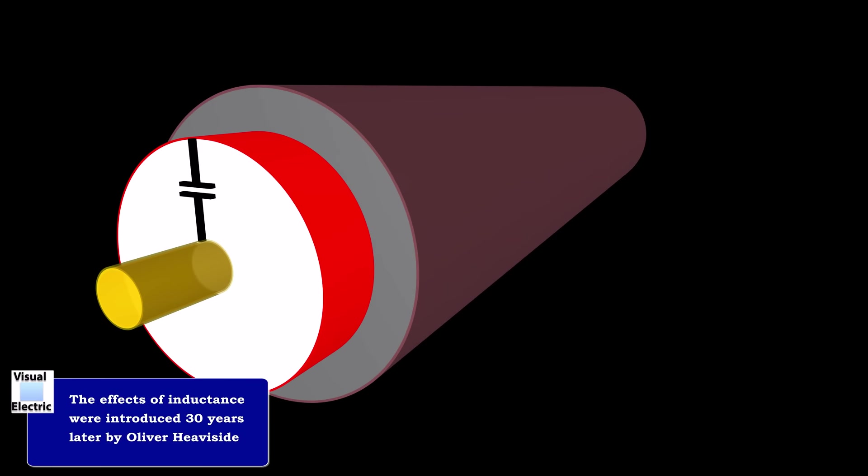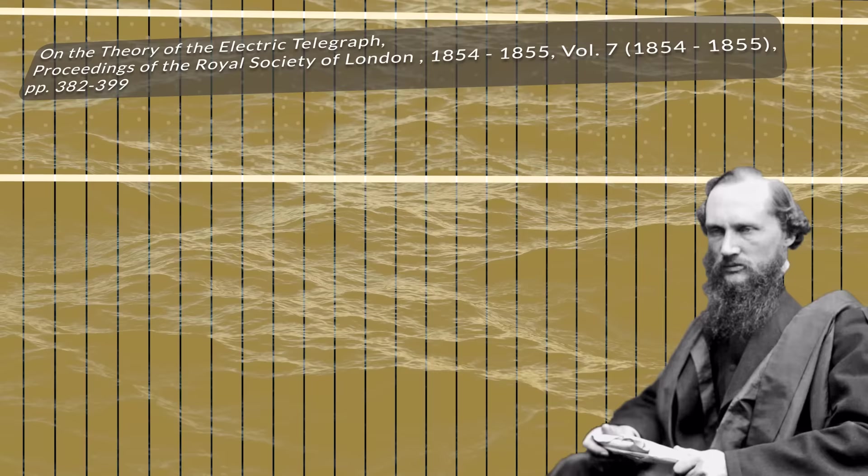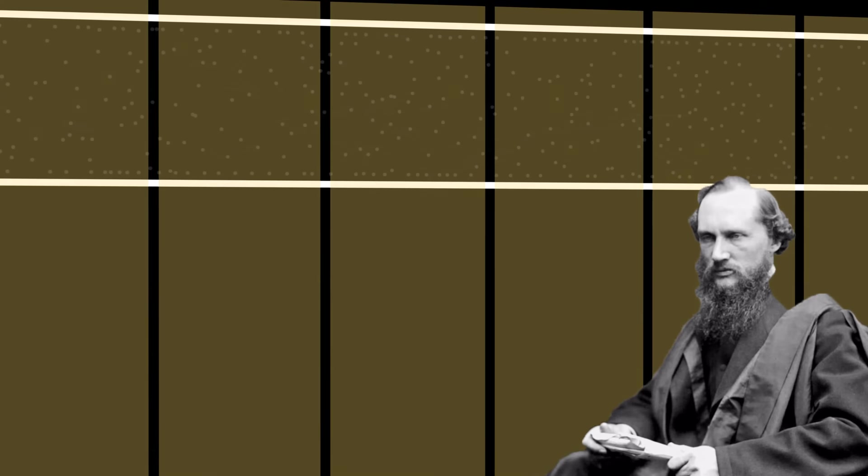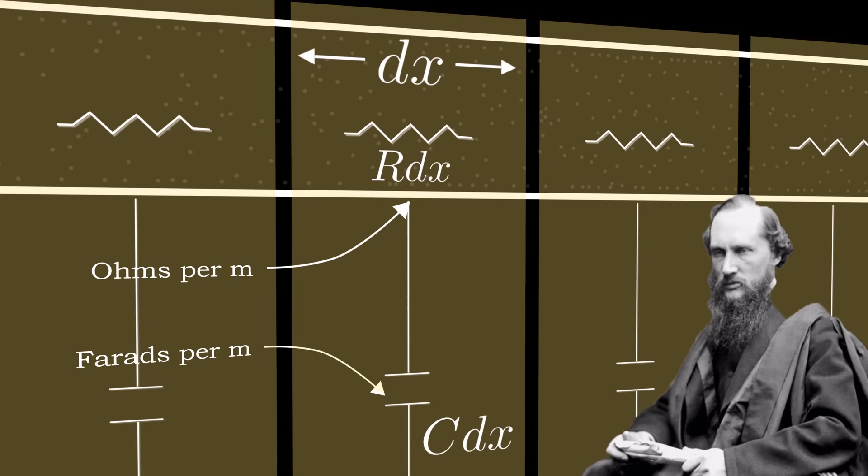But what Thomson produced was unlike anything seen before. Thomson split the transmission line into an infinite number of infinitesimally small sections. The total resistance and capacitance is split equally along the line. And so the portion within each section will be R times dx and C times dx, where both resistance and capacitance are expressed per unit length. And dx is an infinitesimally small length of line.